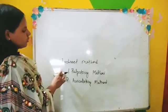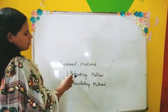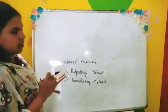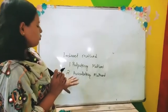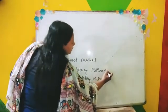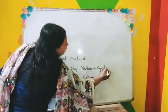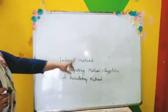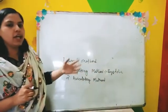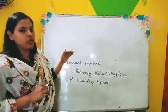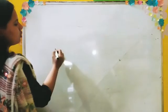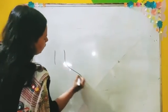In the indirect method, we will first do the palpatory method — as the name says, palpatory means the pulse, and we will watch the pulse. Then we will go to the auscultatory method. The palpatory method is used only to see the systolic blood pressure. We will obtain the systolic blood pressure through the palpatory method, then set the maximum range before proceeding to the auscultatory method.